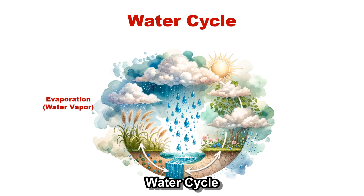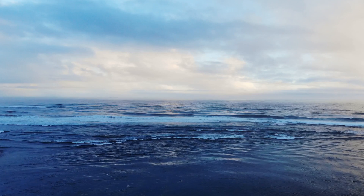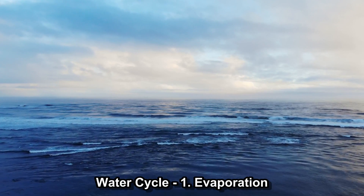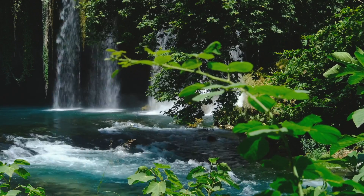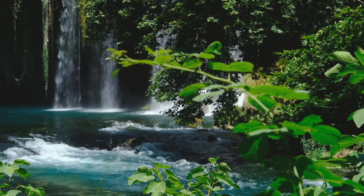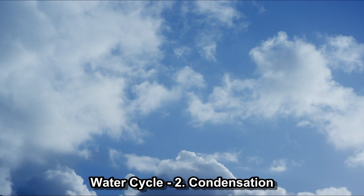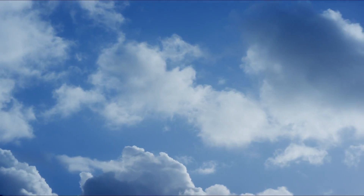The water cycle is a continuous process that moves water through the Earth's ecosystems. It consists of several stages. The first stage is evaporation: water from oceans, lakes, and rivers turns into water vapor and rises into the atmosphere. The second stage is condensation: as the water vapor cools, it forms clouds.